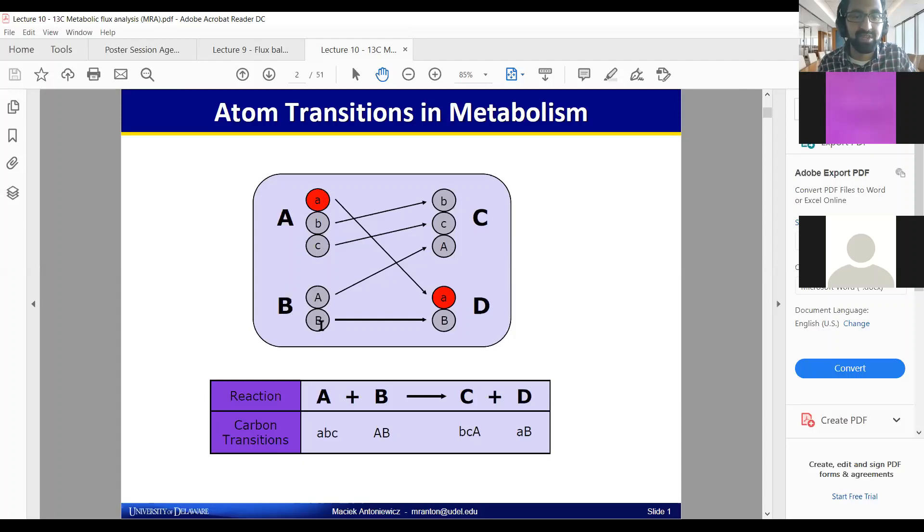If you've got molecule A with little a, b, and c, and molecule B with big A, fundamentally enzymes are moving, in this case, this atom a over to D. That happens at a fixed percentage of time, usually just 100% of the time ending up in one place.